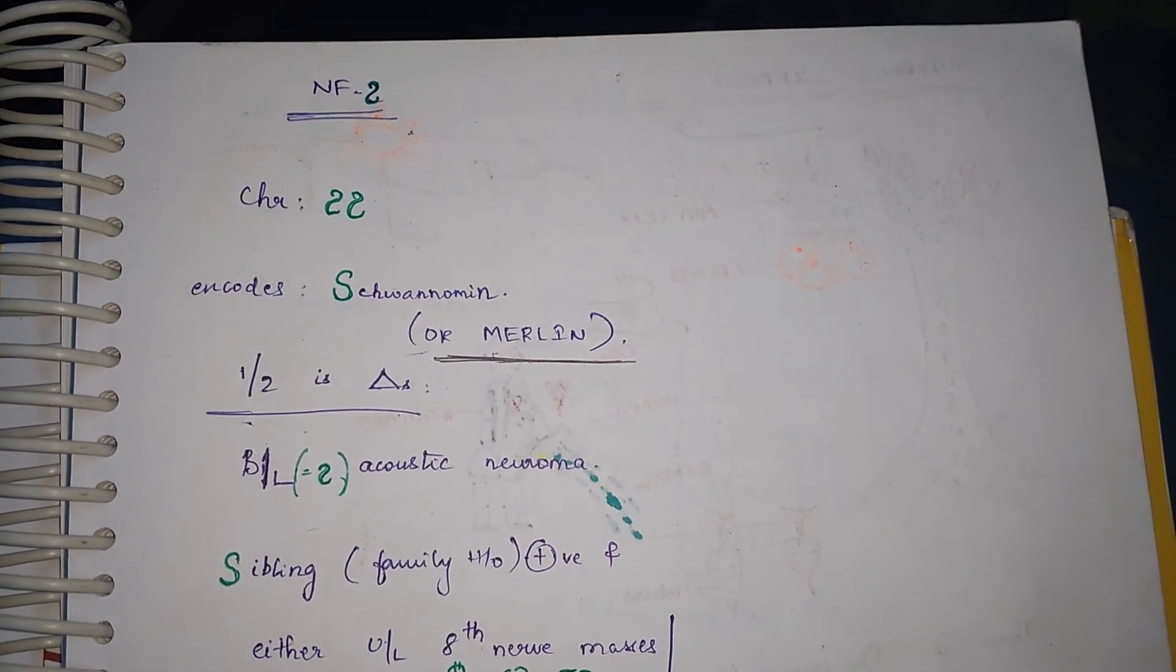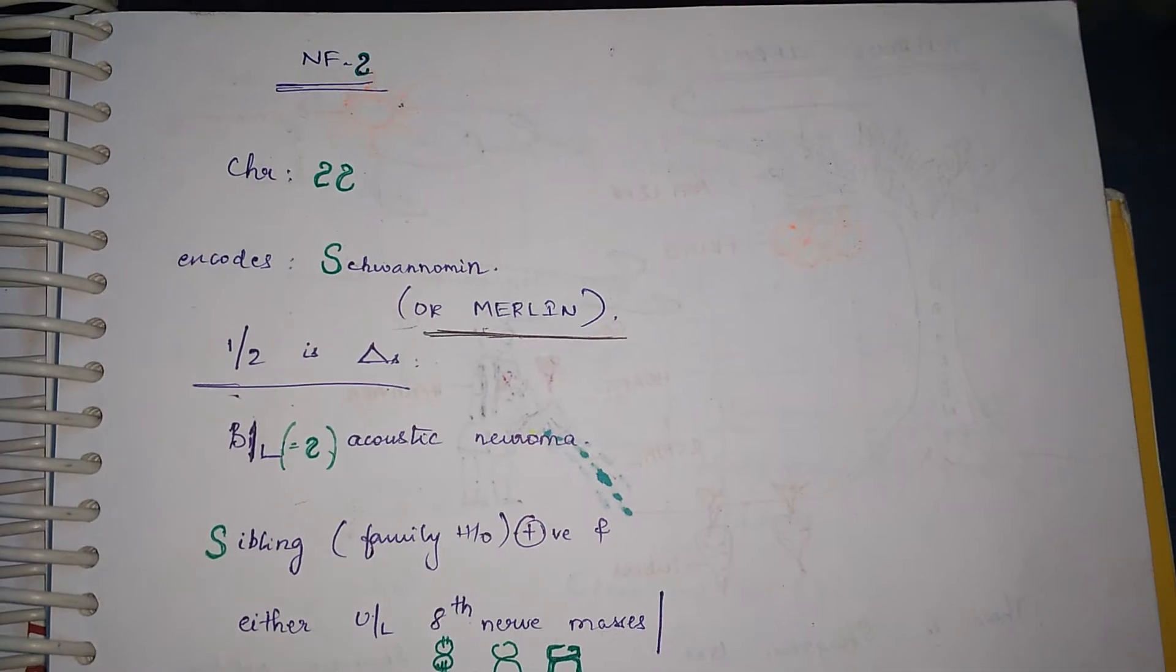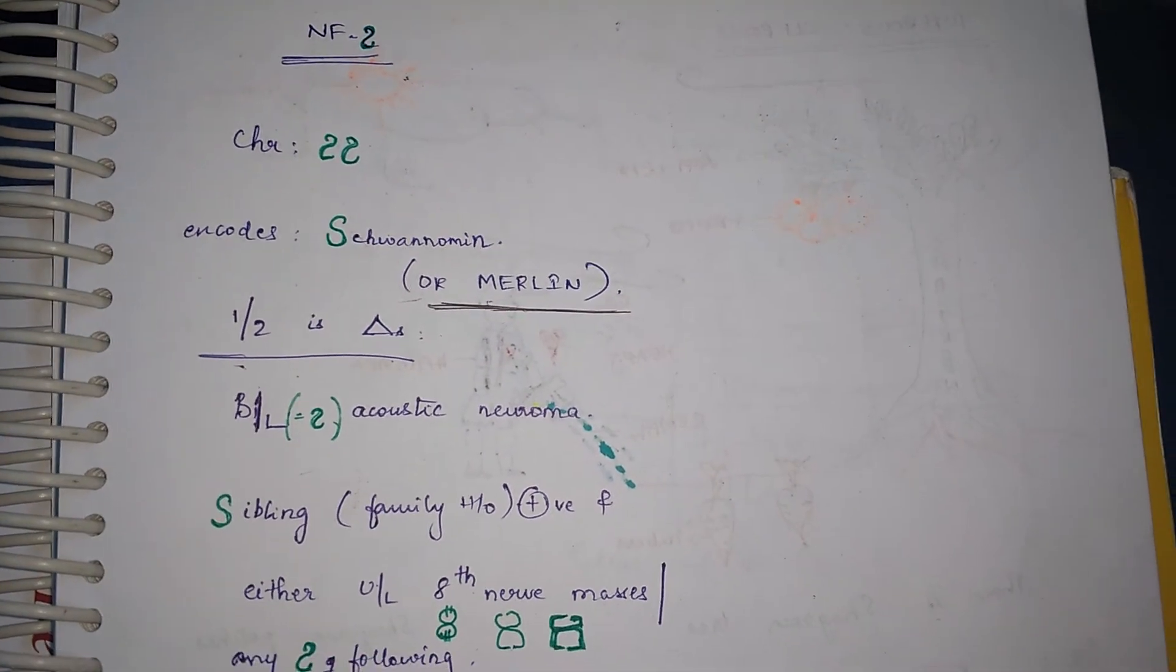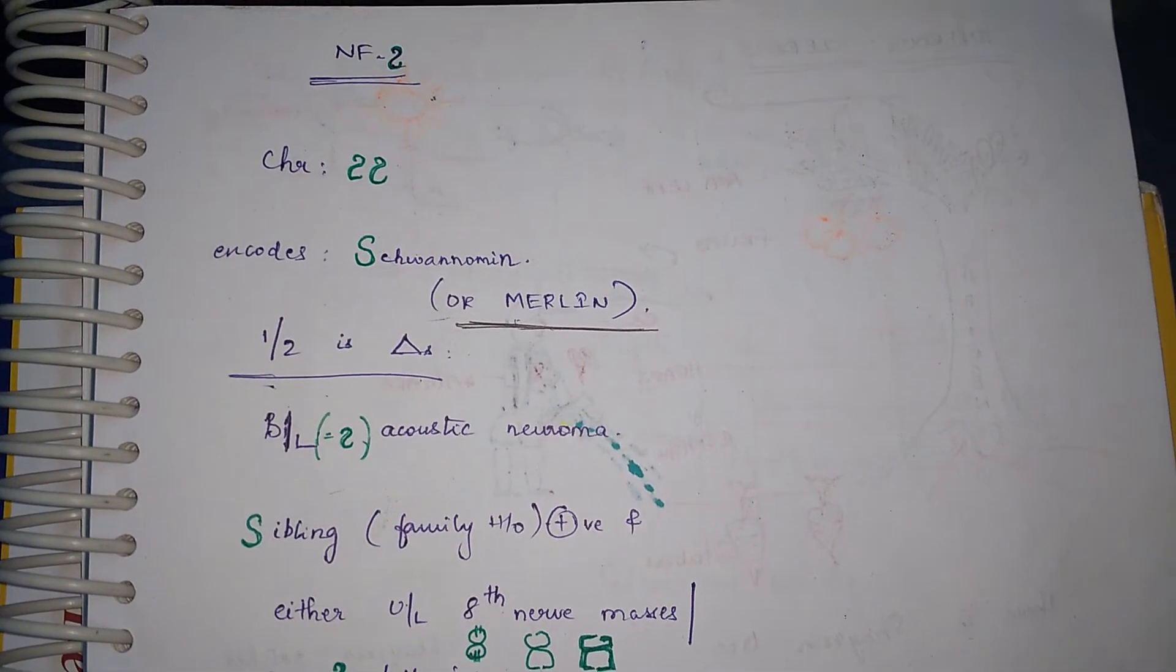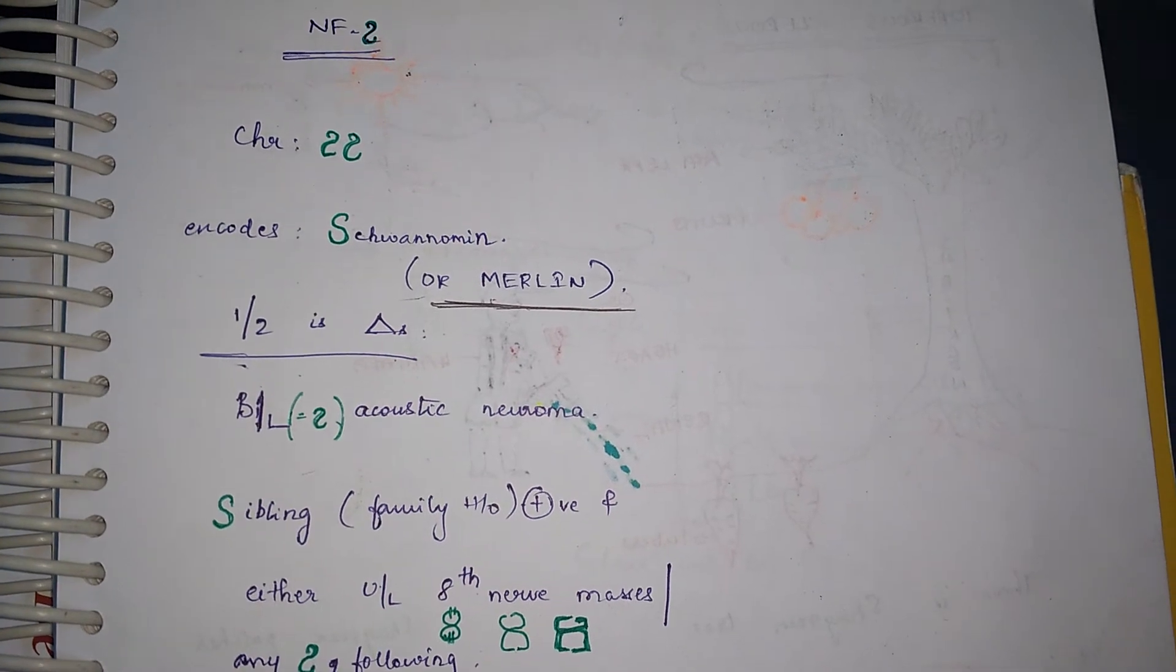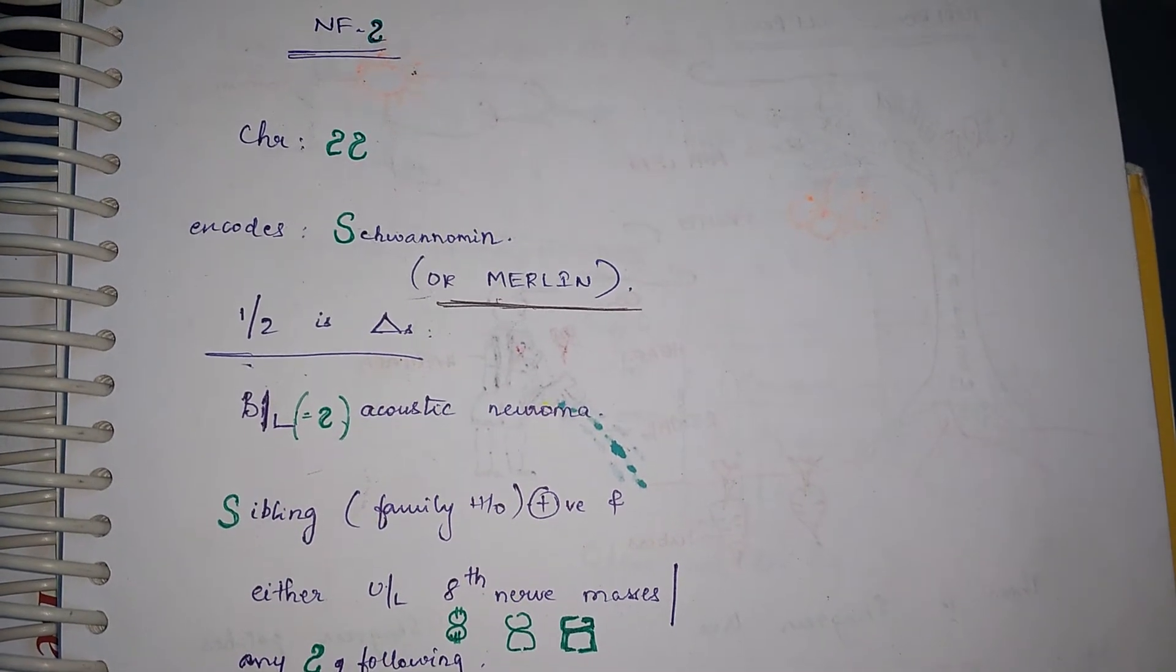We have chromosome 22. It encodes 2, it resembles S. As you can see, that is schwannoma gene or merlin. You have to remember.